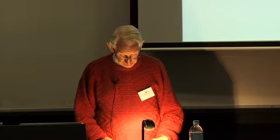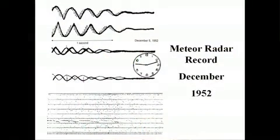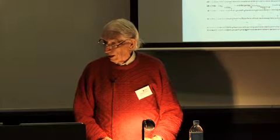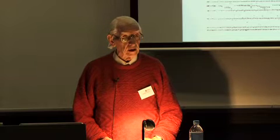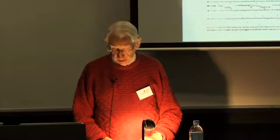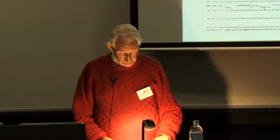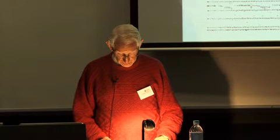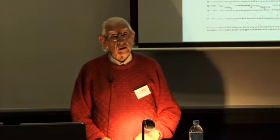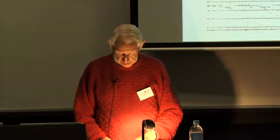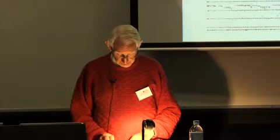This meteor direction finding system was the forerunner for such systems now installed worldwide. The early records were analog — we had to read them all by hand, eye and hand. You'll see some marks in the centre traces that we used to compare one with the adjacent one in order to determine position. It was many years before digitization of the data allowed this operation to be made automatic.